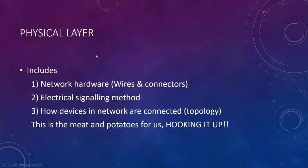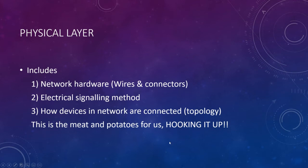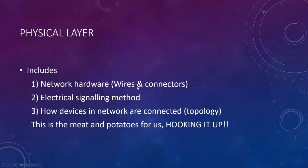The physical layer includes the network hardware — wires and connectors — the electrical signaling method, what voltage levels are used and how we detect ones and zeros, and the physical signal itself. It also covers how devices in the network are connected, which specifically speaks to topology. For us as instrument and control technicians, this is the meat and potatoes — the more we know about it, the less we have to rely on others.